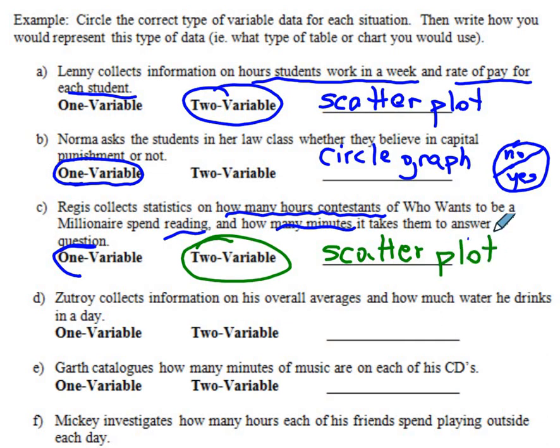Notice that I'm very attached to my scatter plots. We like them. Okay, what about part D? Zutroy collects information on his overall average and how much water he drinks in a day. So there are two things here comparing, an average and how much water he drinks in one day. So what do you think, is this one variable or two variable data? In this case, because Zutroy is comparing his overall average, which is a variable, to how much water he drinks in a day, which can also be changed, it's a two variable graph and definitely I would use a scatter plot for that to identify it.